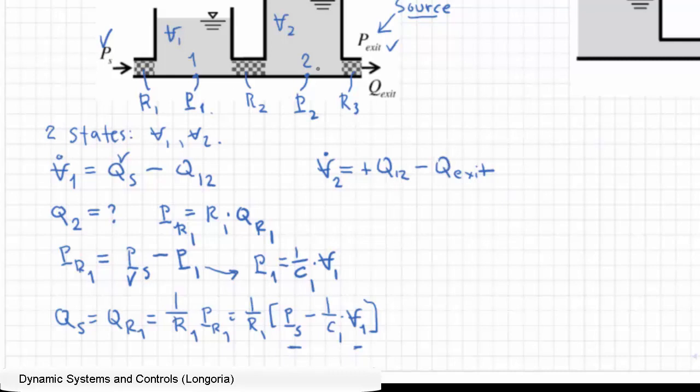You'd be able to find the Q_exit the same way—pressure to the different pressure difference. In this case, it's P2 minus P_exit, and so on. Let you finish that one as an exercise.